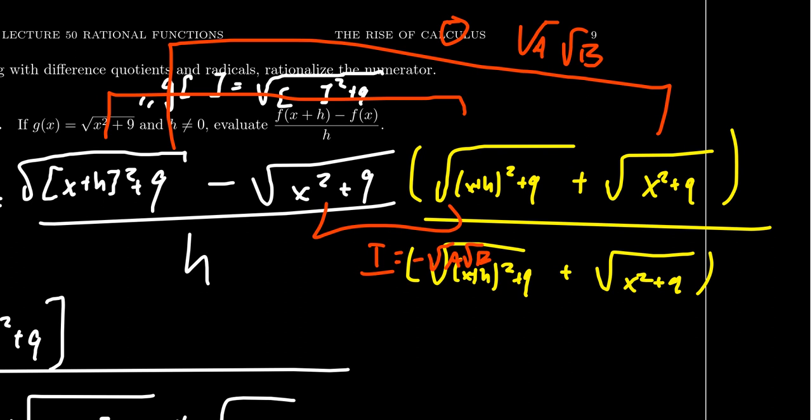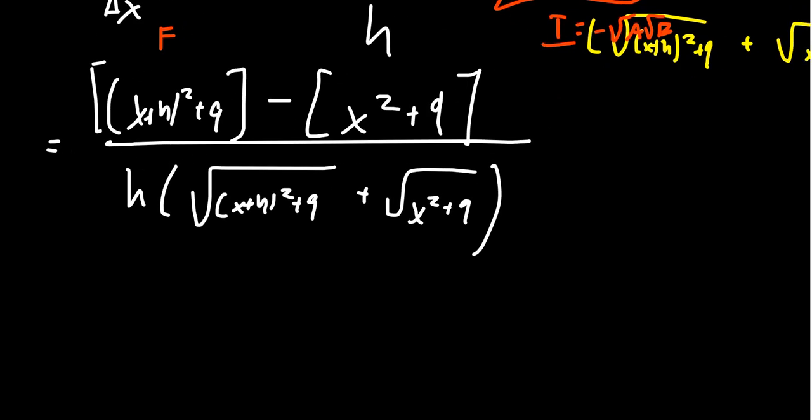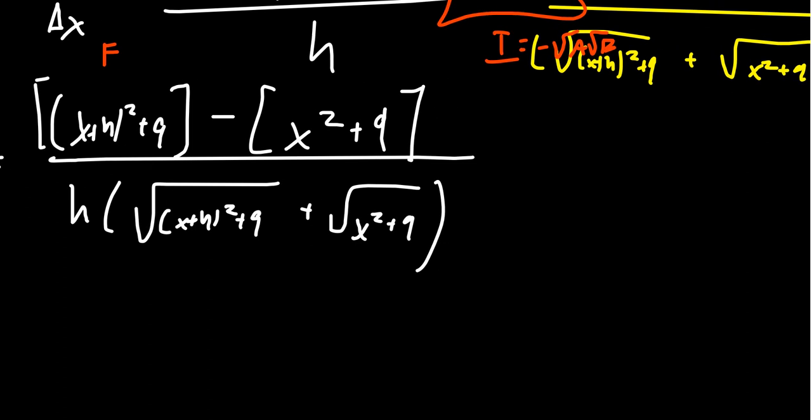And so then the last thing to do is the last terms. You take this one times that one. You get the square root of x squared plus 9 times the square root of x squared plus 9, but you're just squaring a square root. That ends up giving you minus x squared plus 9. So we rationalized the numerator. All the square roots in the numerator disappeared, so we can actually simplify that thing nicely.